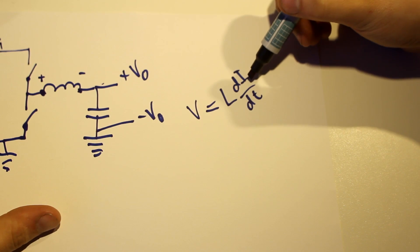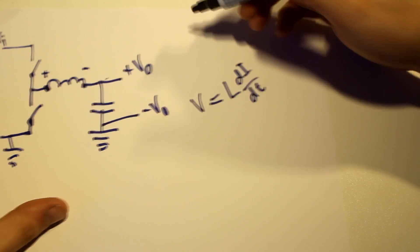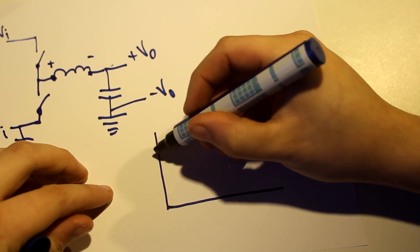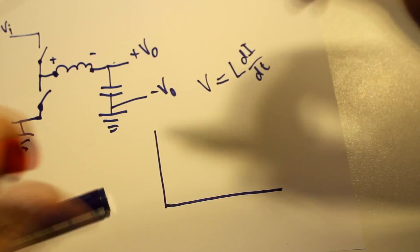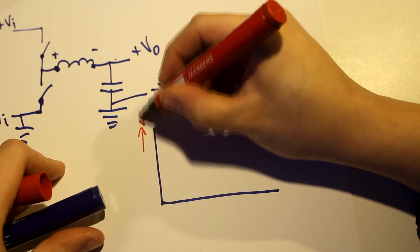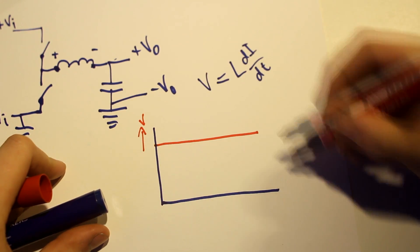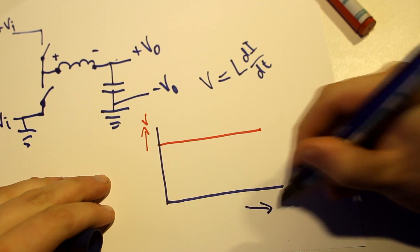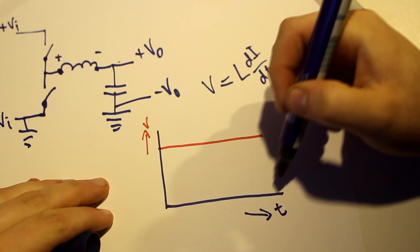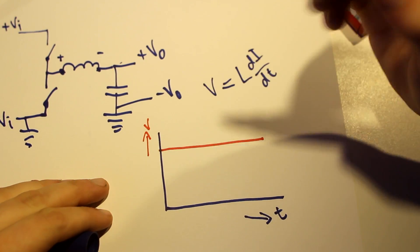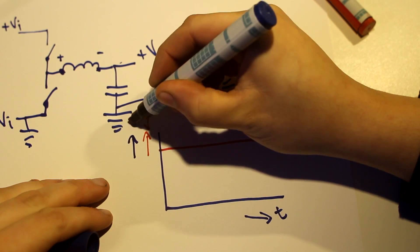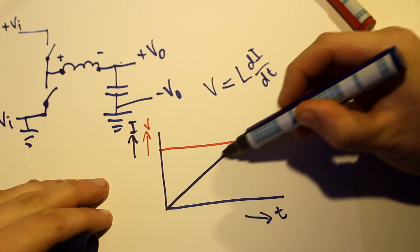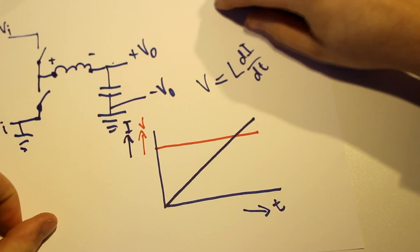So what happens if I put a constant voltage? Here is a constant voltage over time. Horizontal axis is time, vertical axis is voltage. What happens to the current? If I express the current as the blue line on the vertical axis, the current does this. Goes up linearly. This is all you need to know.